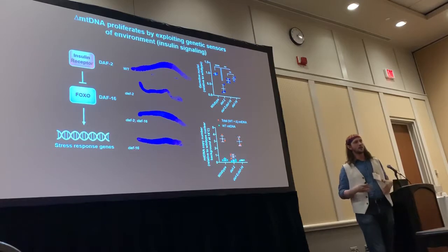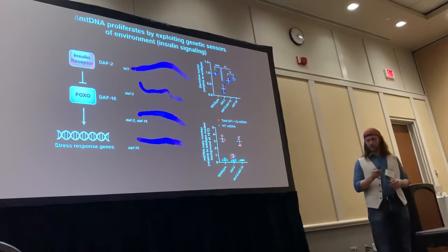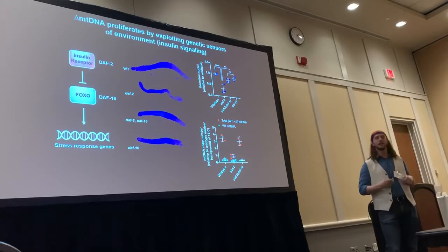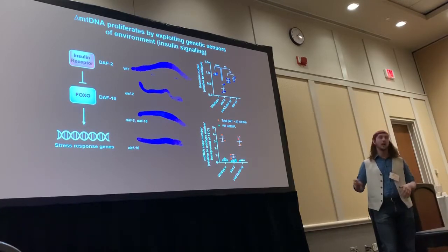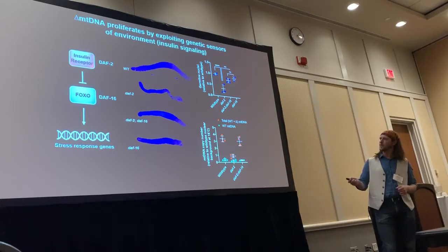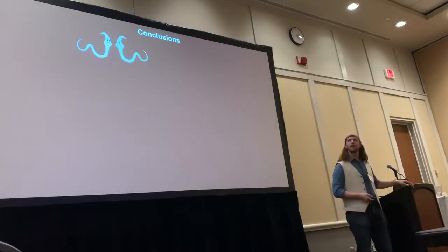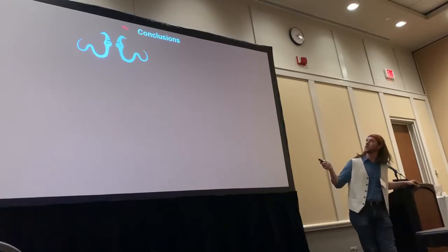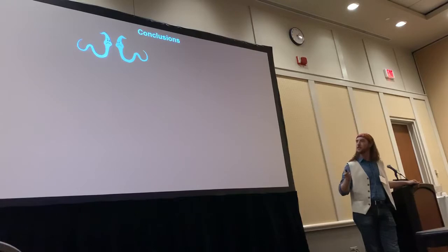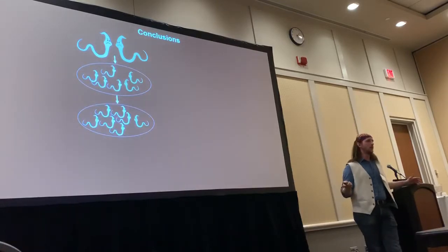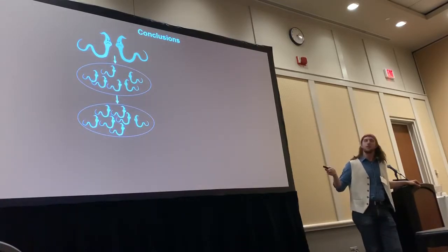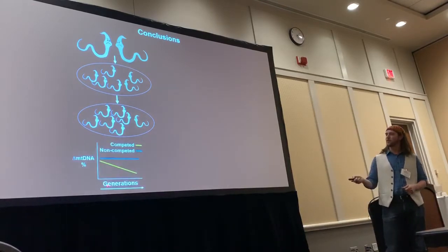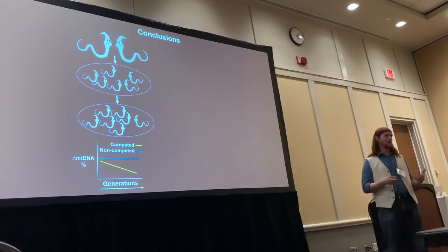What this is telling us is that the mutant mitochondrial genome is taking advantage of external nutrient status — or at least as perceived through the insulin signaling pathway — to amplify its own copy number. In conclusion, if you take animals that have wild-type mitochondria and those that have the mutant mitochondria — this one's green because it has a mitochondrial disease — and you compete them across multiple generations, the wild-type mitochondria confers a fitness advantage on the host. And this manifests in the form of declining mutant mtDNA levels over generations.